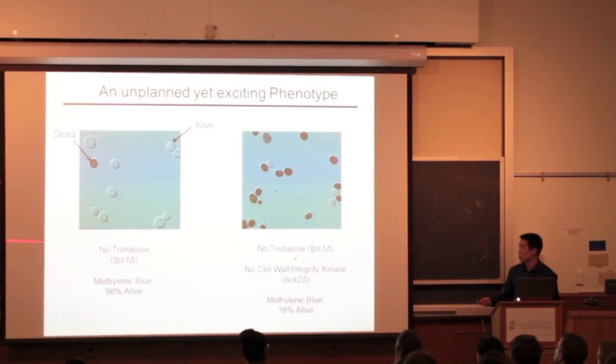Shown here is a strain with no trehalose stained with methylene blue. And you can see that most of these cells remain white, meaning that they are 98% alive.